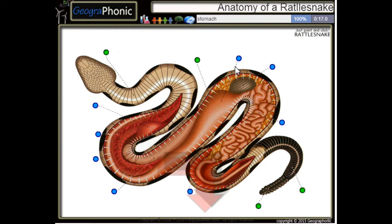This is a rib, a single rib. This is the stomach of the rattlesnake.